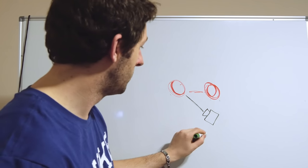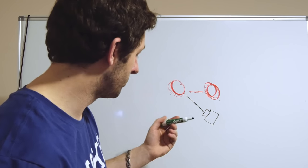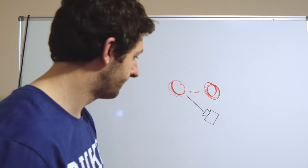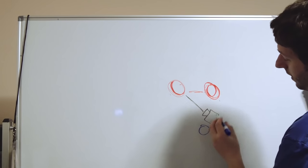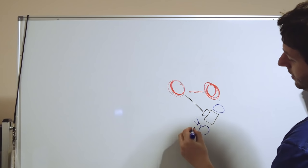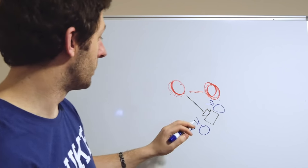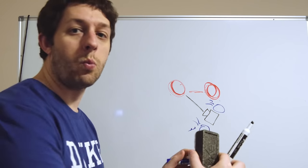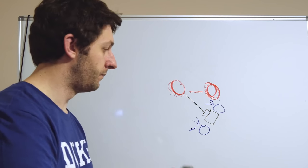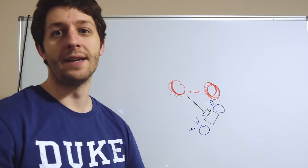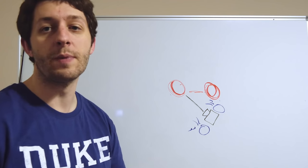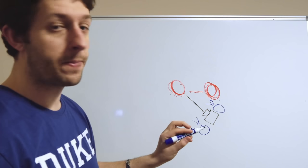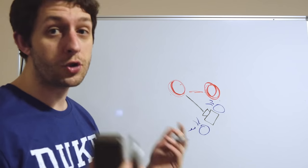Set up your camera, get your framing right, make sure your lighting is set up too. What you don't want to do is move the camera every time the next person speaks. Leave it there and play out the whole scene. While this is happening you'll obviously have someone recording the sound.